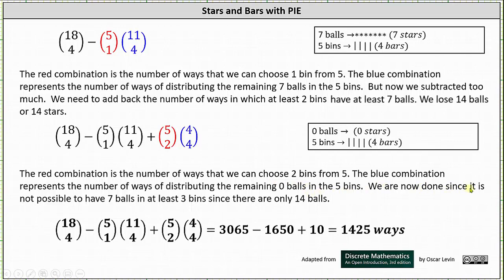We are done here since it's not possible to have seven balls in at least three bins, as there are only 14 balls total. So the final result is: 18 choose 4 minus the product of 5 choose 1 and 11 choose 4, plus the product of 5 choose 2 and 4 choose 4, which gives us 1425 ways to complete the task if each bin can have no more than six balls. I hope you found this helpful.